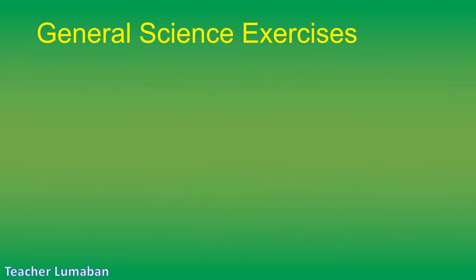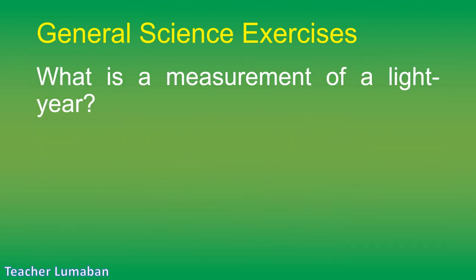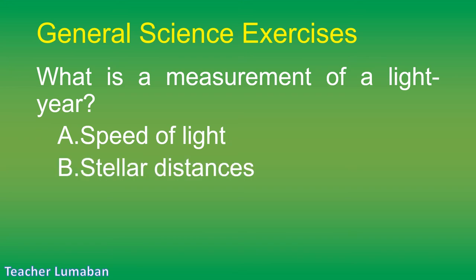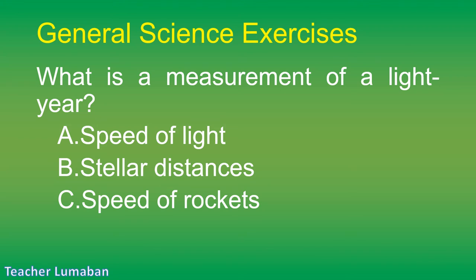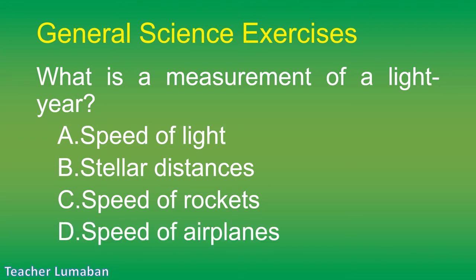What is a light year a measurement of? Letter A: speed of light. Letter B: stellar distances. Letter C: speed of rockets. Letter D: speed of airplanes.